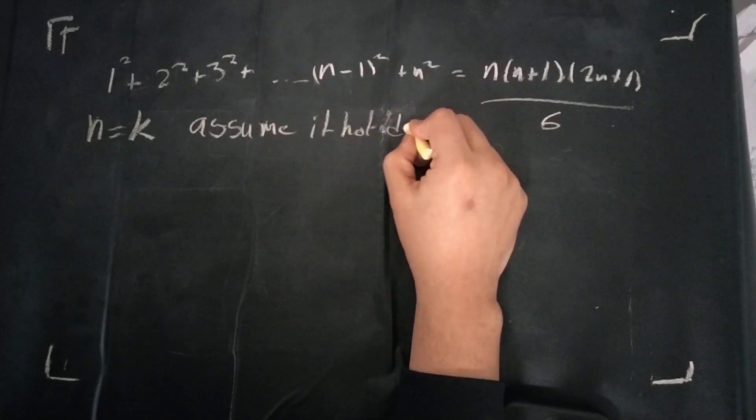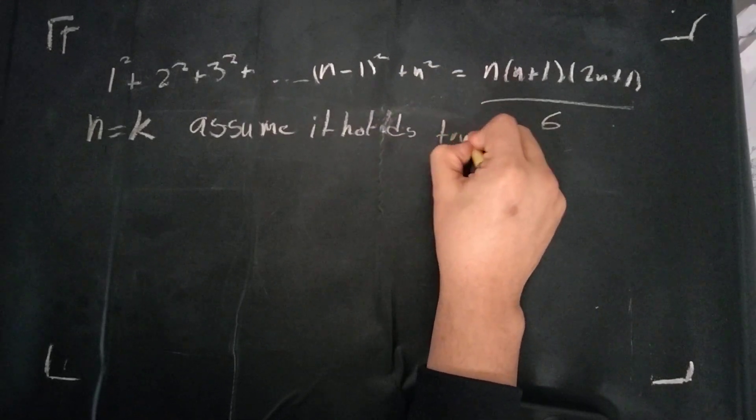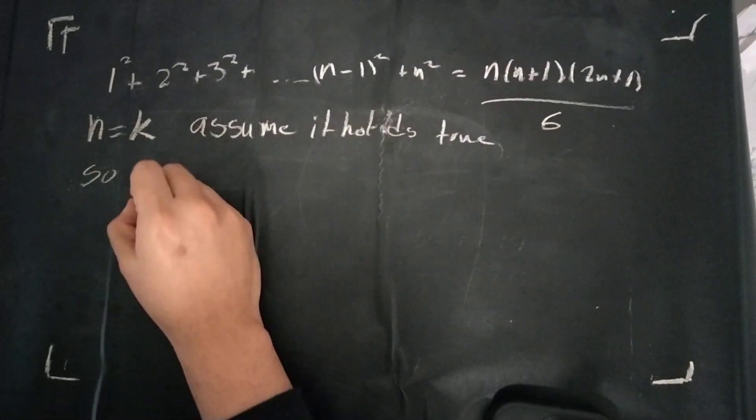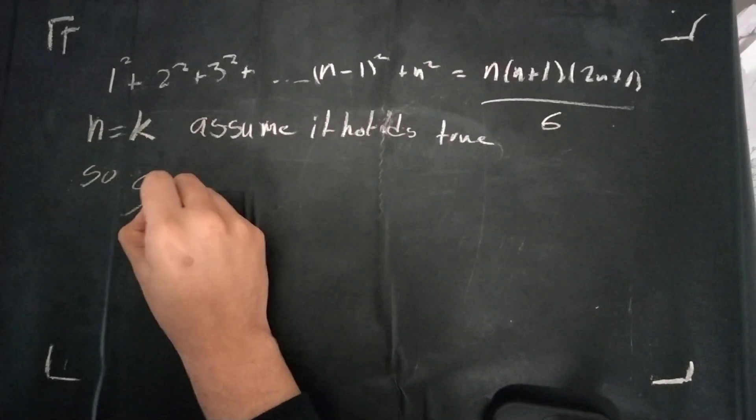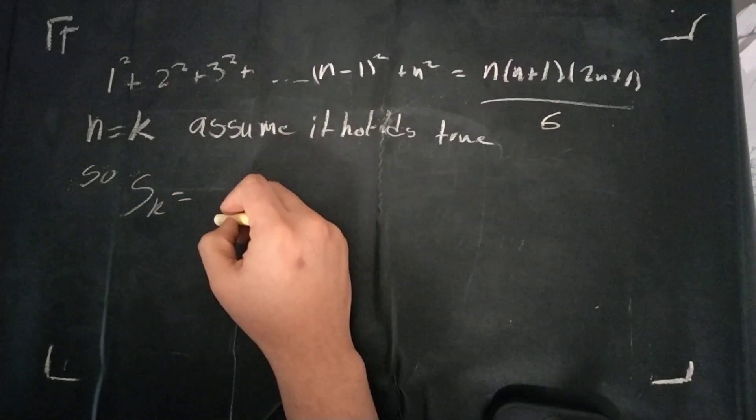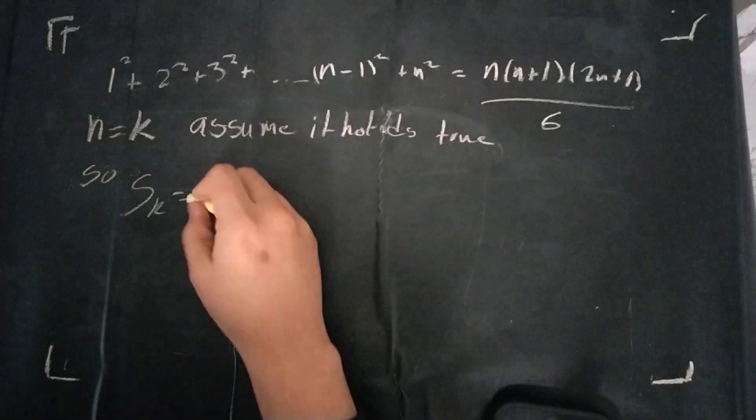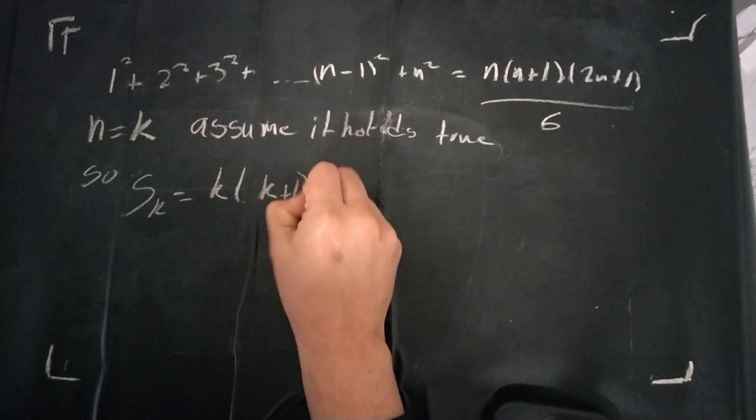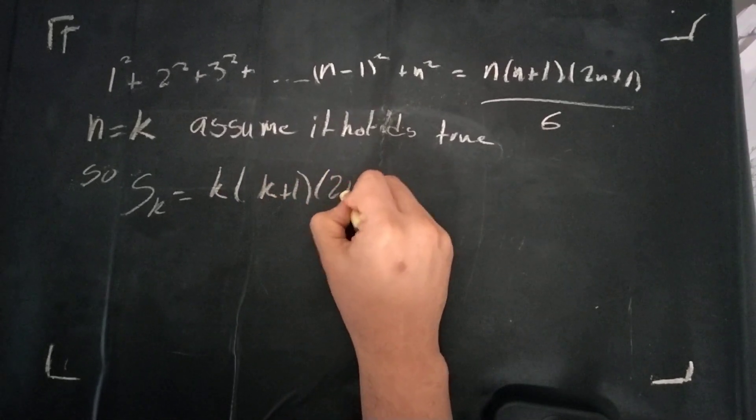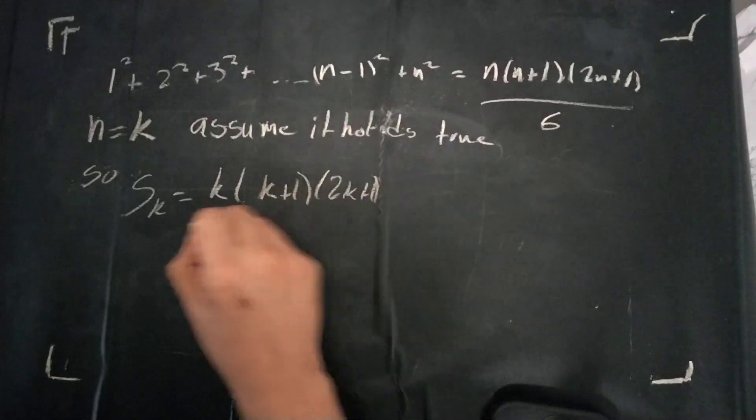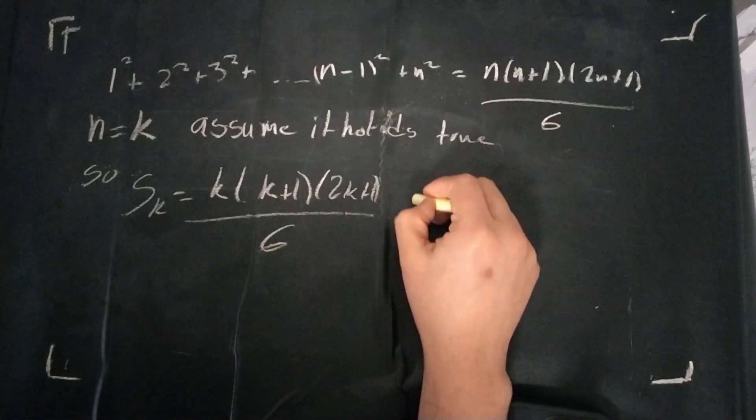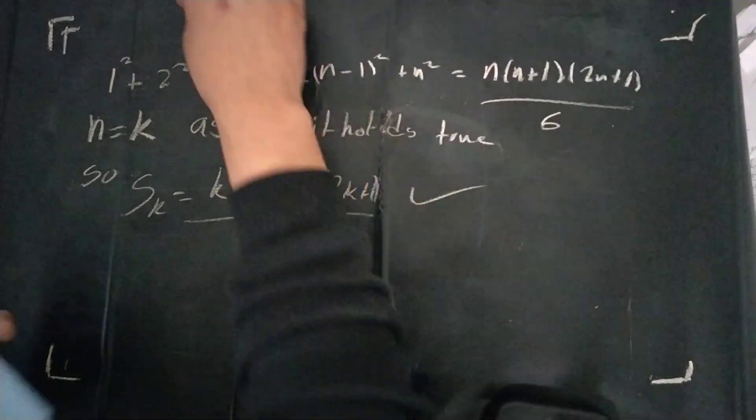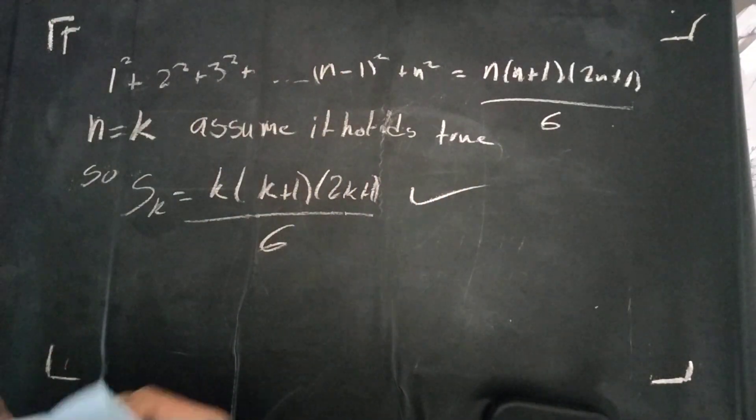Assume it holds true. So we can say that for this sequence k, we can substitute the k values there. So, go to k, k+1, 2k+1, over 6. We'll say that it holds true for this. And we'll play around with this later.